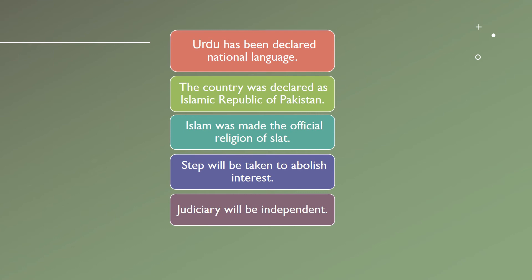Islamic Constitution: The country was declared as the Islamic Republic of Pakistan, and Islam was made the official religion of the state. Steps will be taken to abolish interest. Zakat and Usher will be enforced, and the President and Prime Minister should be Muslim.